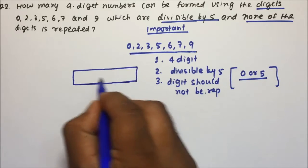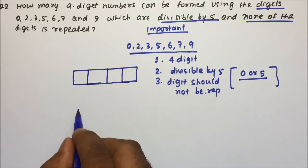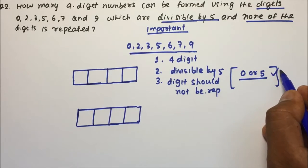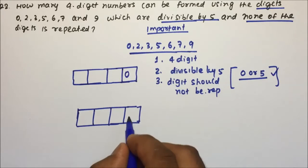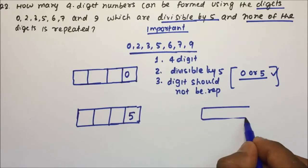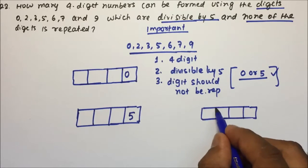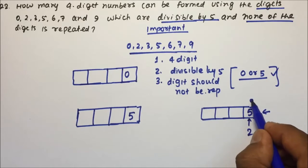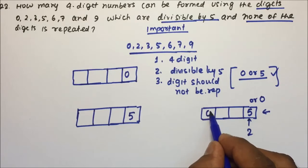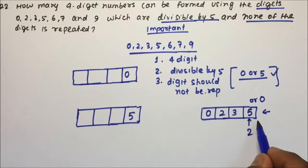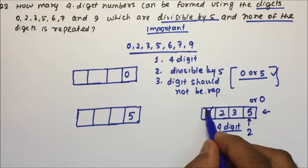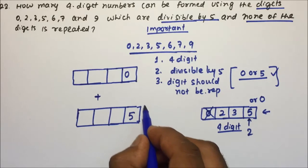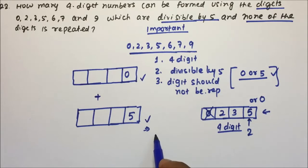I am making two separate boxes for the two cases. If the number ends with 0, there is only one choice for the last place. Then the first place has 6 remaining choices. The second place has 5 choices, and the third place has 4 choices. If instead the number ends with 5, we put 5 at the last place — one choice. But for the first place, we cannot use 0, so we have 5 choices. Then the second place gets 5 choices and the third place gets 4 choices.